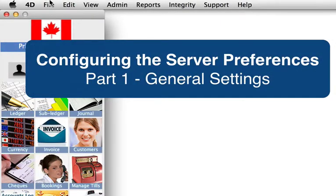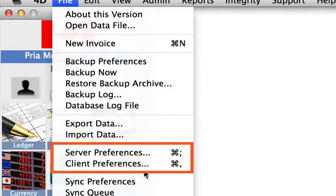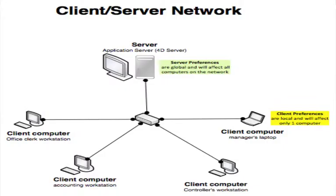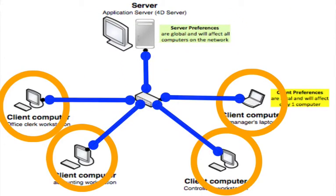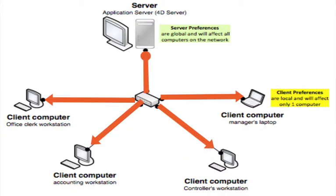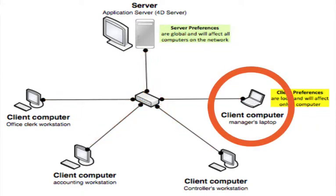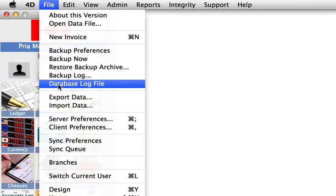In this video I will show you how to set the server preferences. The system preferences consist of server preferences and client preferences. In a network environment, also known as a client-server environment, there is a server and there are clients, and these clients are connected to the server. Changes to the server preferences are global and will affect all the machines in the network, whereas changes in the client preferences are local and will only affect that particular machine. Even in a standalone environment where there is only one computer, you still have to set the server preferences and the client preferences.